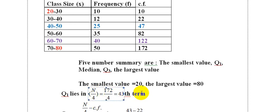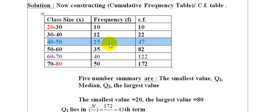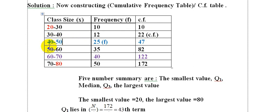N by 4 gives us the 43rd term. Q1 lies in the 40-50 class interval. We identify that CF before this class is 42, frequency F of the class 40-50 is 25, and L, the lower boundary, is 40.